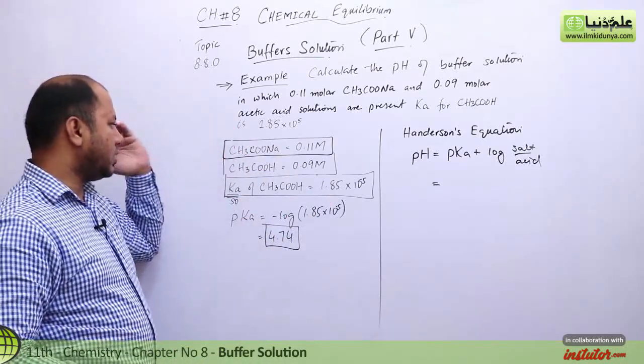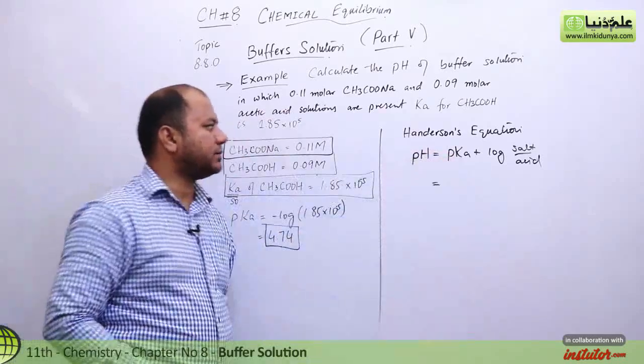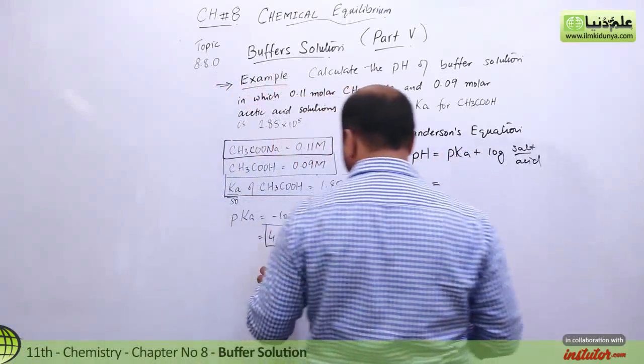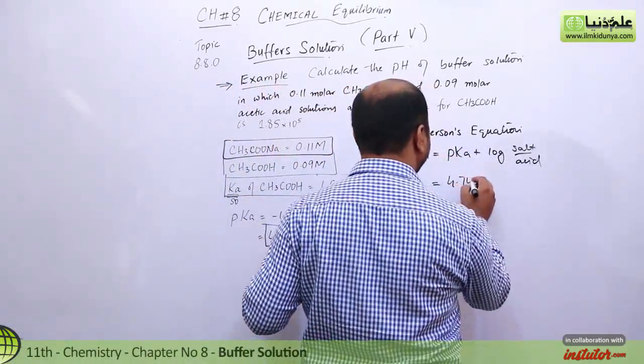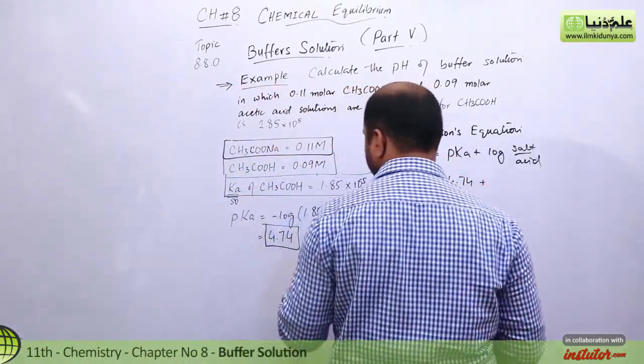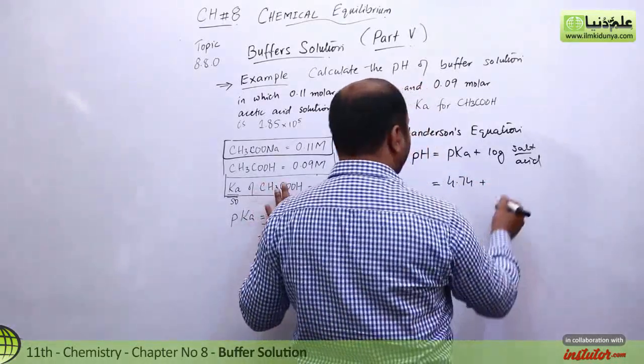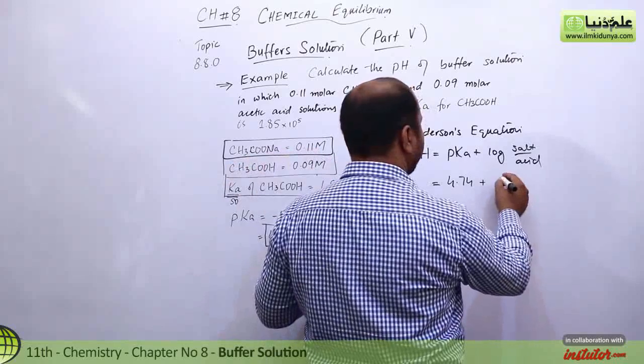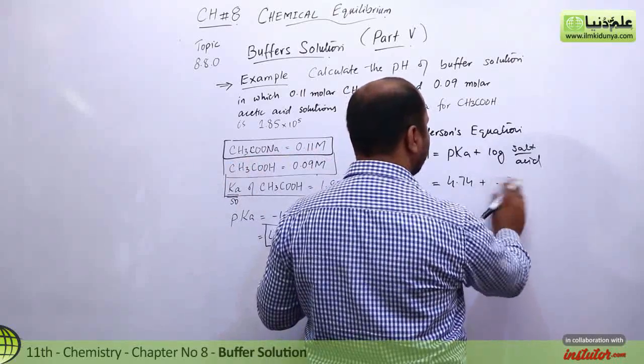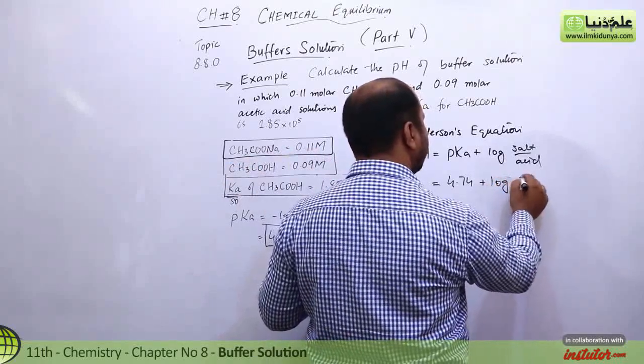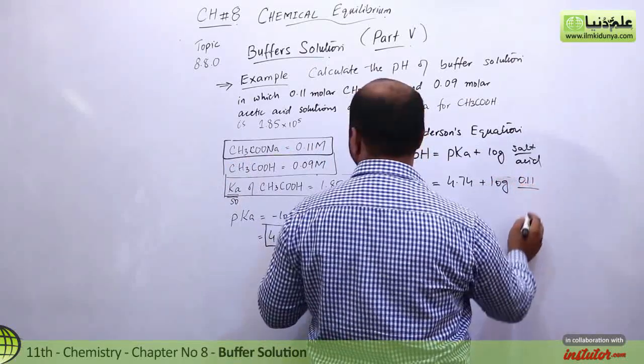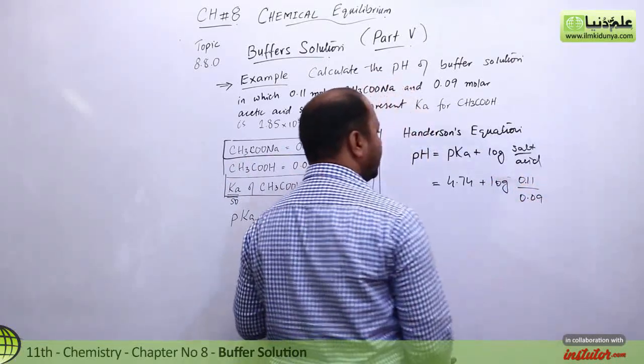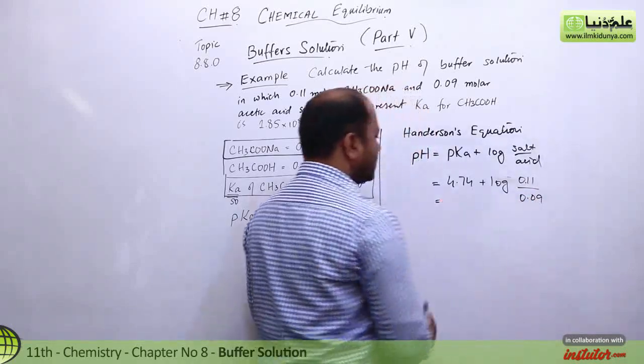Now we use Henderson's equation and put the values in. pH = 4.74 (the pKa value for acetic acid) plus log of salt concentration over acid concentration. Salt concentration is 0.11 molar and acid is 0.09 molar.